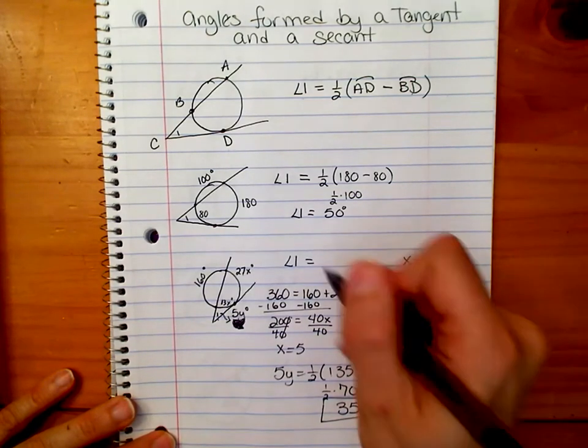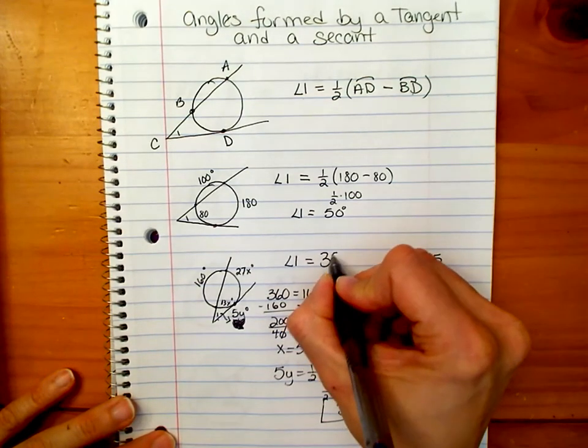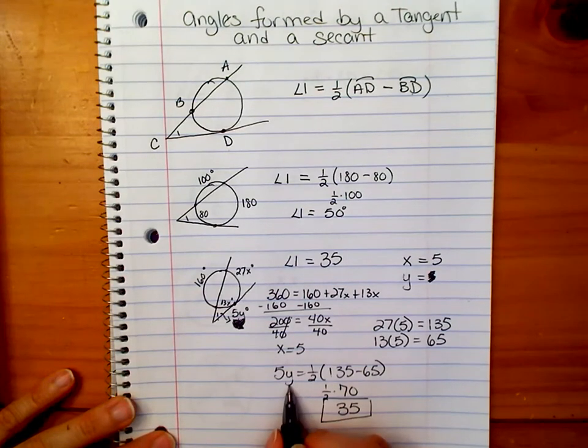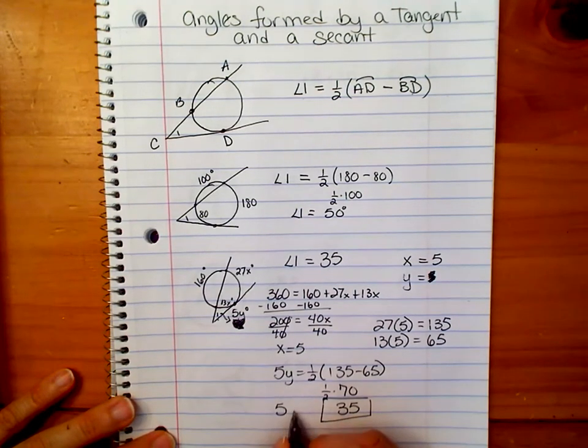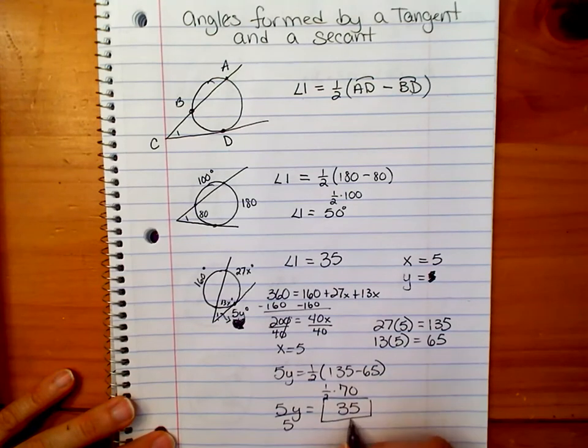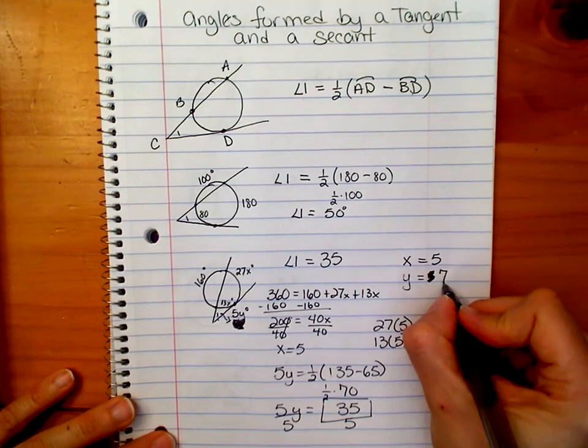Well, that is actually our angle. So our angle is 35. But they also ask for y. So we take 5y equal to 35. If we divide both sides by 5, we get y equals 7.